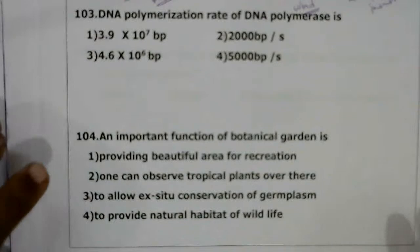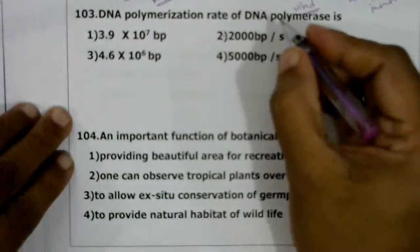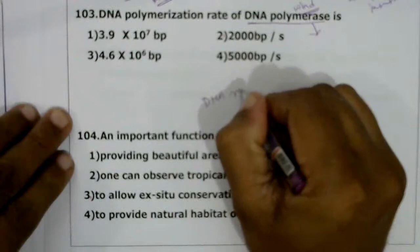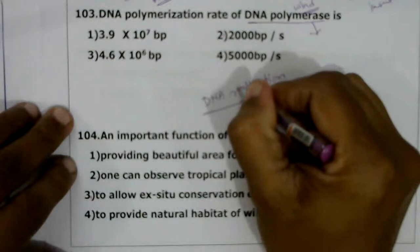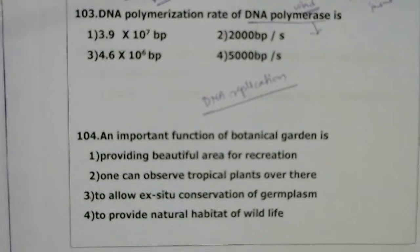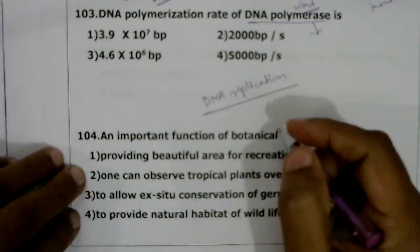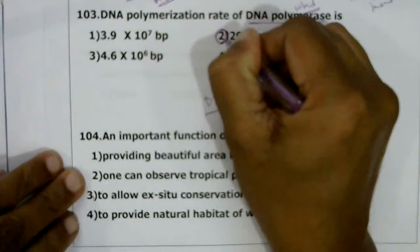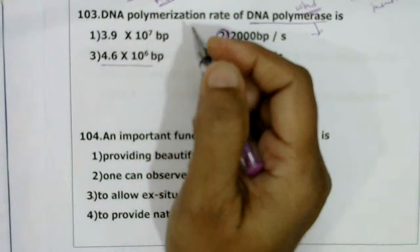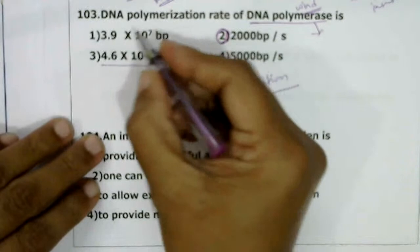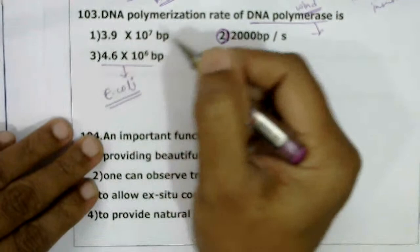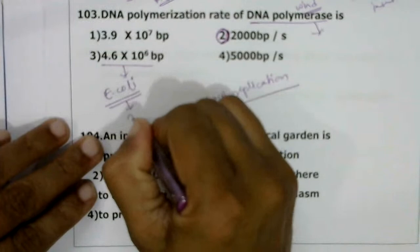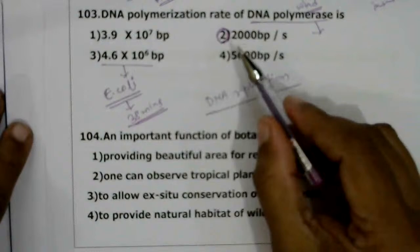Next question on DNA polymerization rate: DNA polymerase is the enzyme required for DNA replication. It is highly efficient, adding about 2000 base pairs per second. The E. coli cell contains approximately 4.6 × 10⁶ base pairs, and replication of the entire genome requires only 38 minutes, demonstrating the high rate of replication.